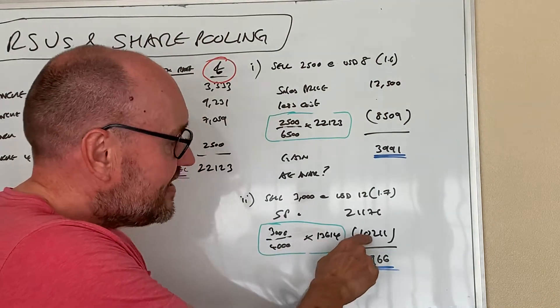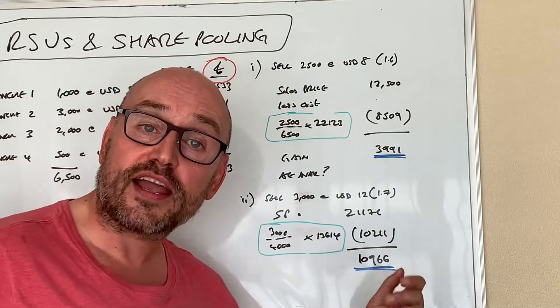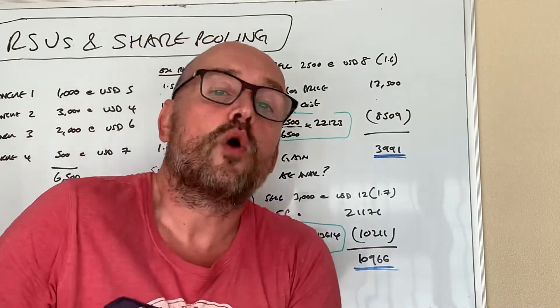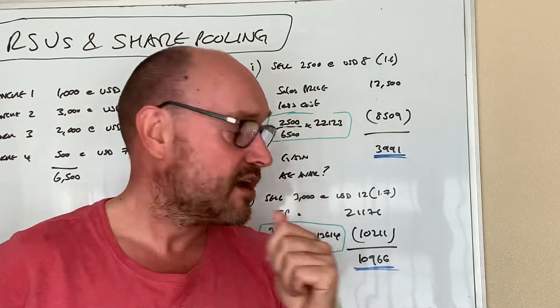Which means that what you've got left is thirteen and a half grand cost. Then three thousand over four thousand times that ten thousand leaves a capital gain of just shy of eleven thousand pounds.